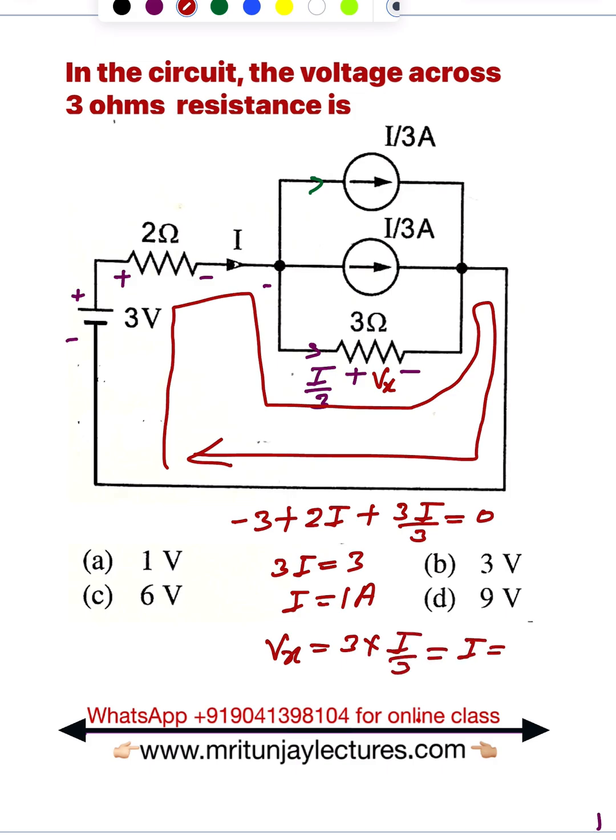Since I is basically 1, we get 1 volt. So Vₓ equals 1 volt. It means the first option is the correct option. Thank you.